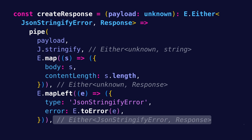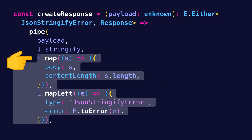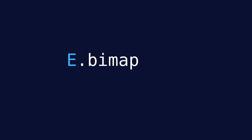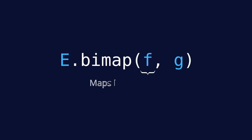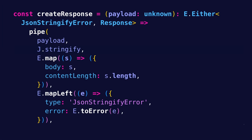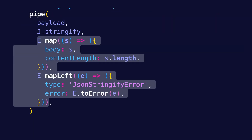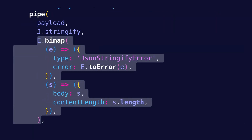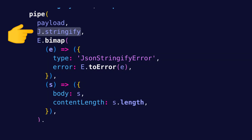Also note that in this case, we are mapping both the right and the left value of the Either. For cases like this, there is also another util called Either.bimap, which takes two functions — one to map the left value and one to map the right value. So if we have an Either Left, it will map it using the first function, and if we have an Either Right, it will map it using the second function. So in createResponse, we can replace map and mapLeft with bimap and get the same result.